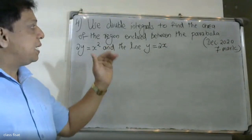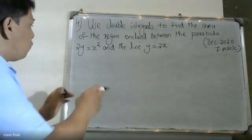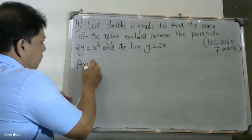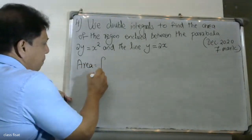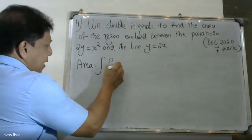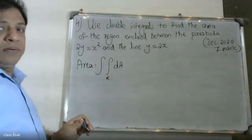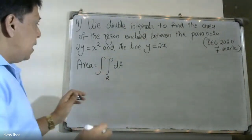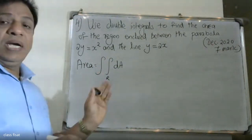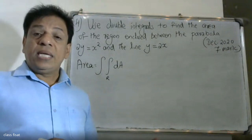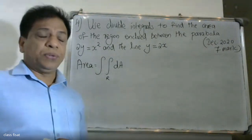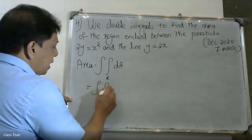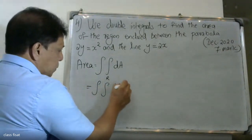Area is equal to double integral over region R of dy dx. That is the area formula using double integration.